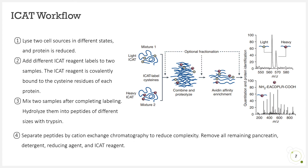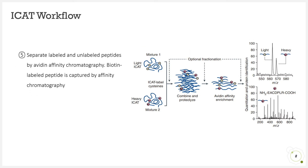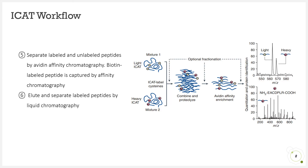In the fourth step, separate peptides by cation exchange chromatography to reduce complexity, and remove all remaining trypsin, detergent, reducing agent, and ICAT reagent. Fifth, separate the labeled and unlabeled peptides by avidin affinity chromatography. Sixth, the labeled peptides are eluted and separated again by liquid chromatography. Seventh, they are then analyzed by tandem mass spectrometry.